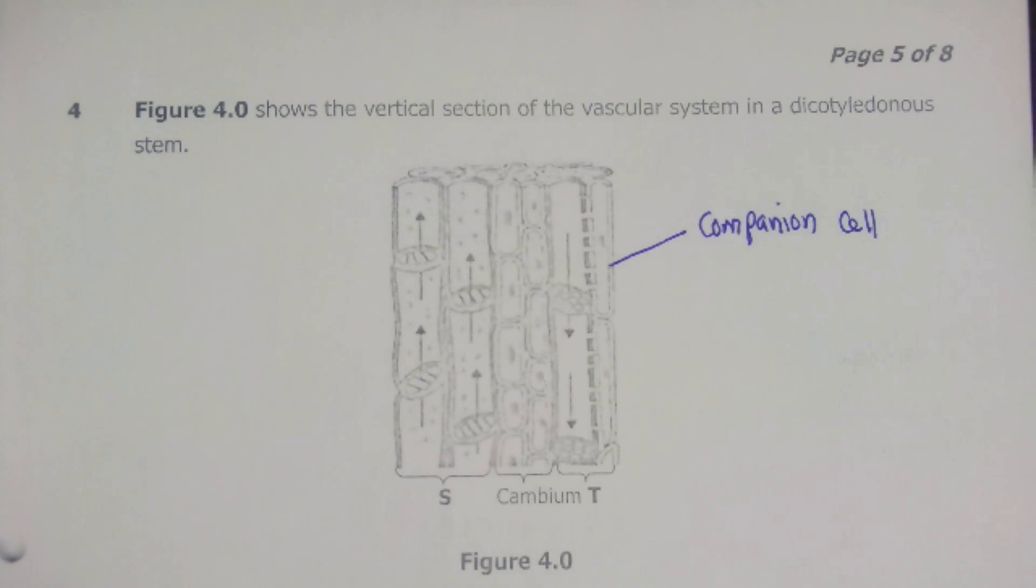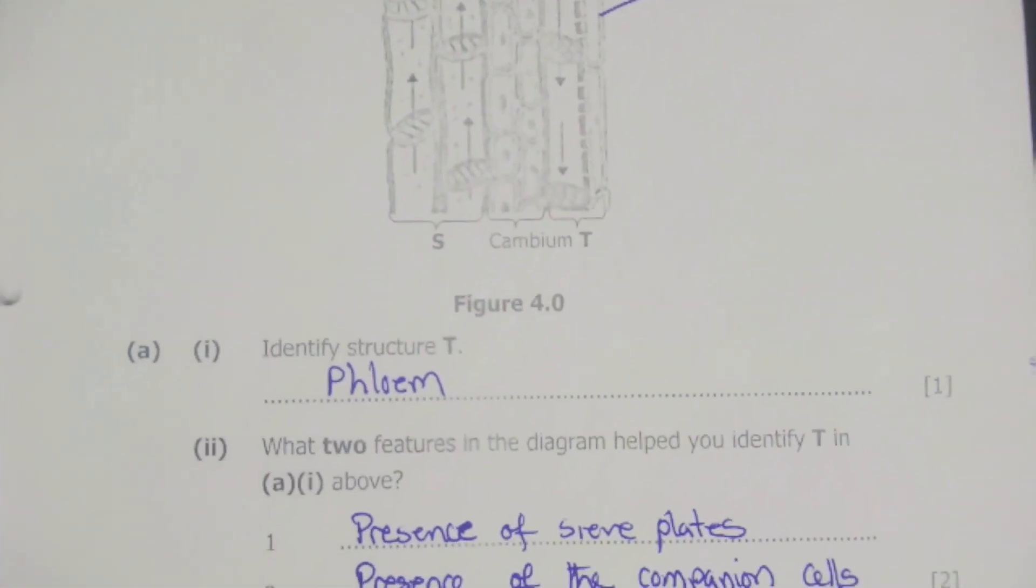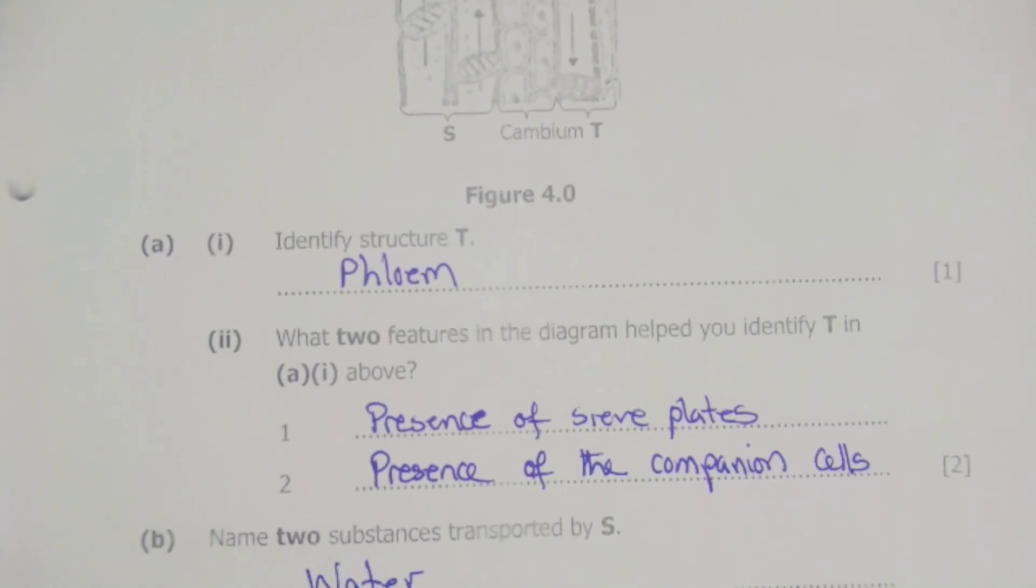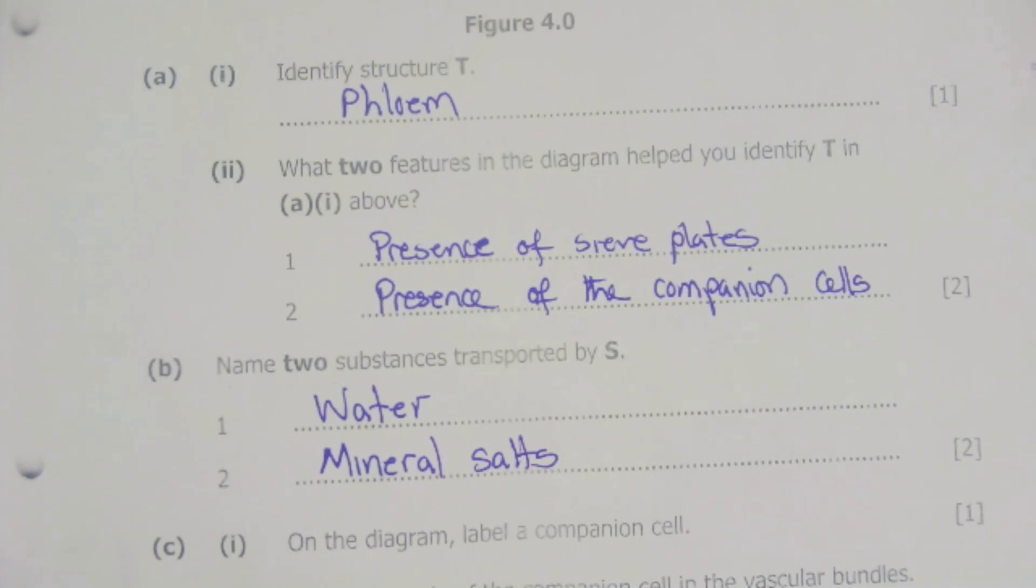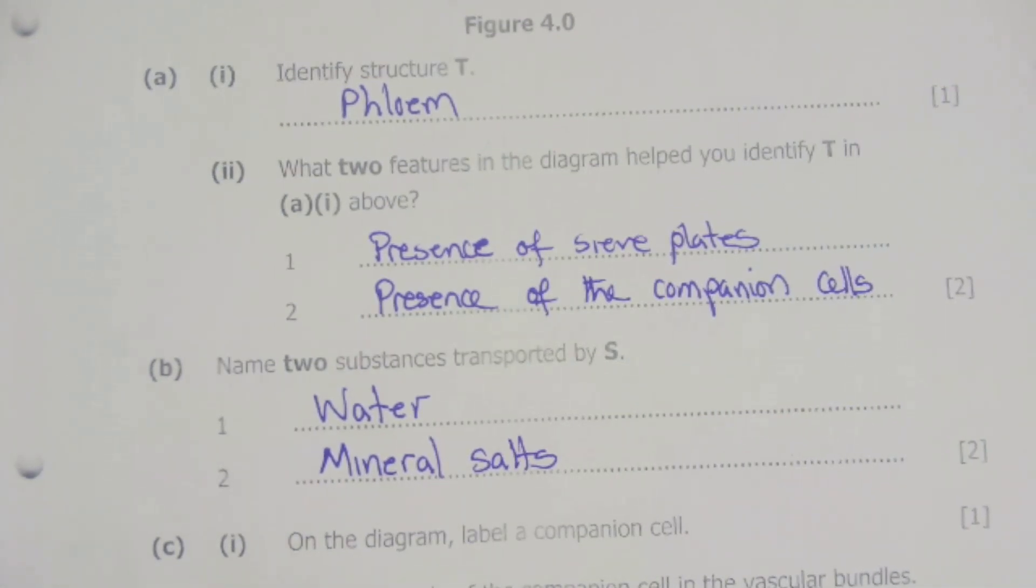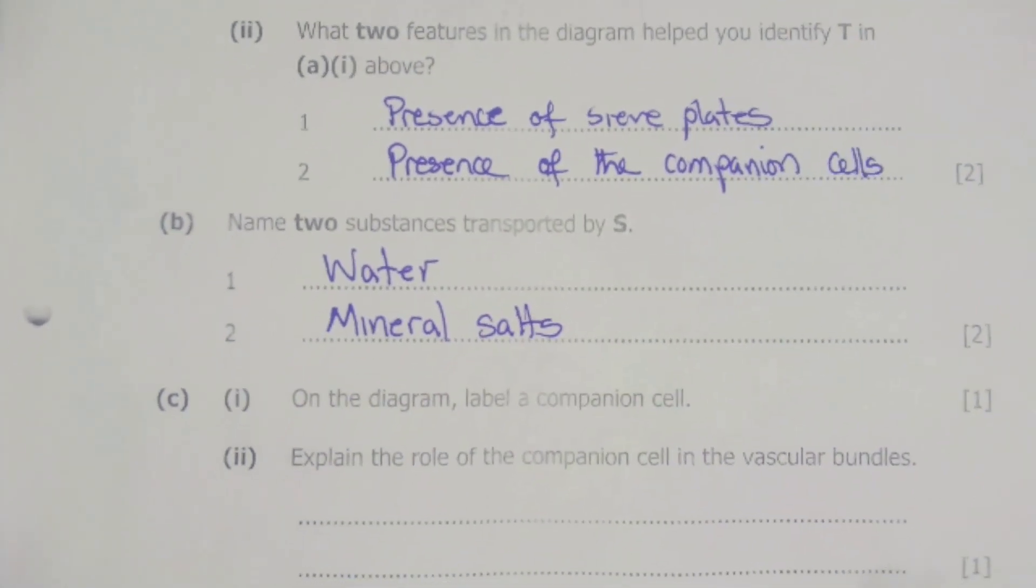So here we can now label companion cell. That is the solution to question number C1. We have labeled on our diagram. So we can now move on to the next question, which is C2.